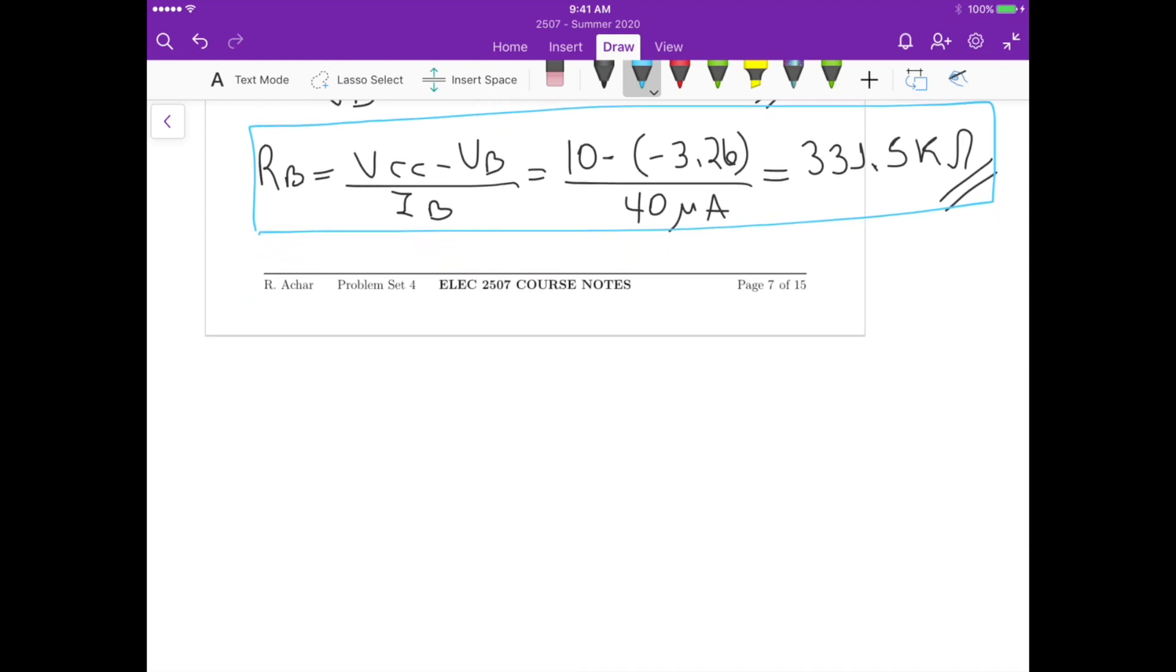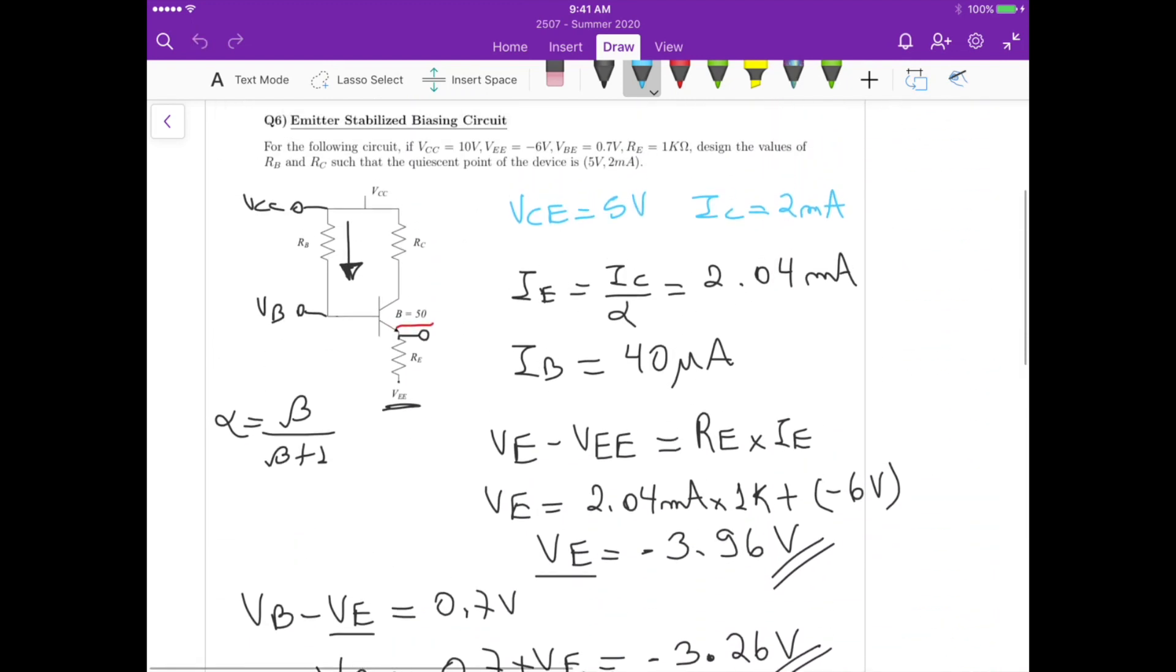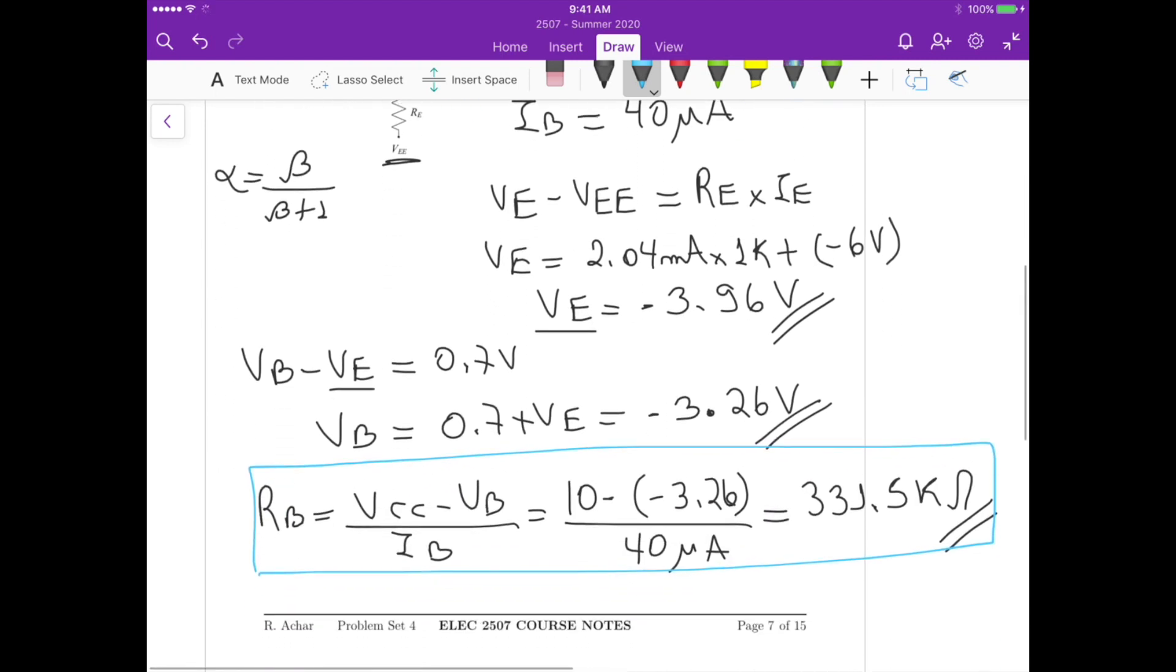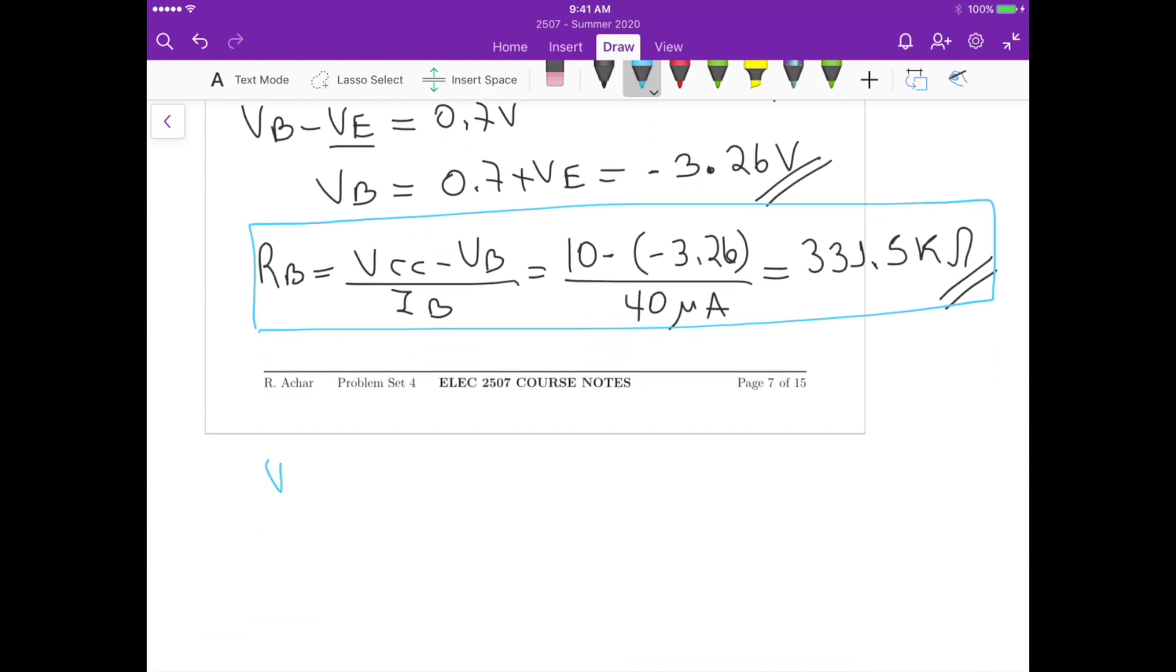Now, for RC, we know that the potential difference between the collector and the emitter should be equals to 5 volts, that's from the Q-point. So we know VE, we can determine VC. So VC minus VE should be equals to 5 volts. This means that VC is equals to 5 volts plus VE.